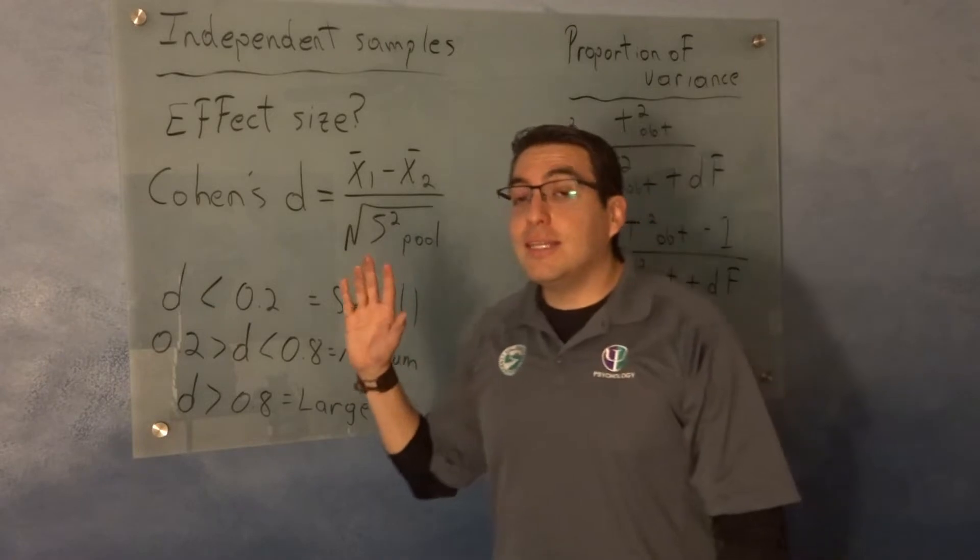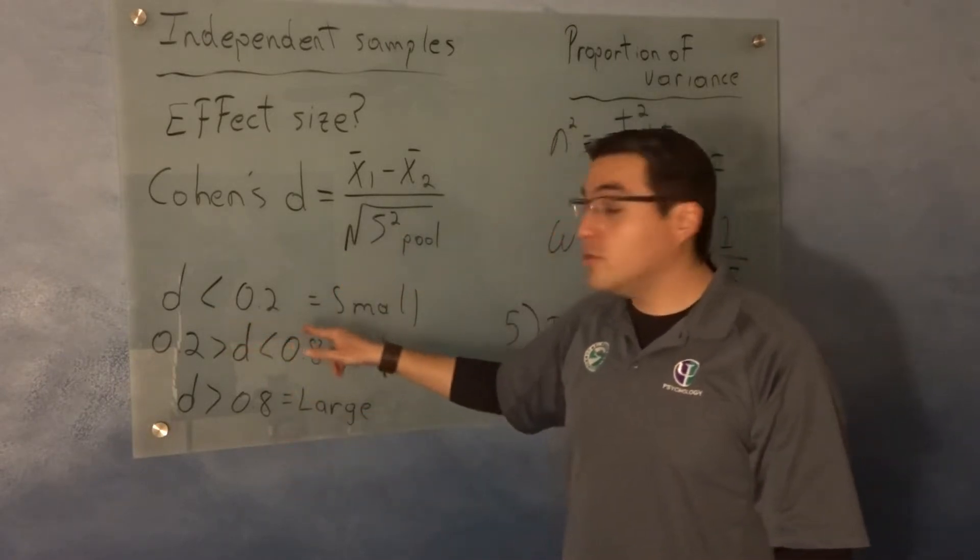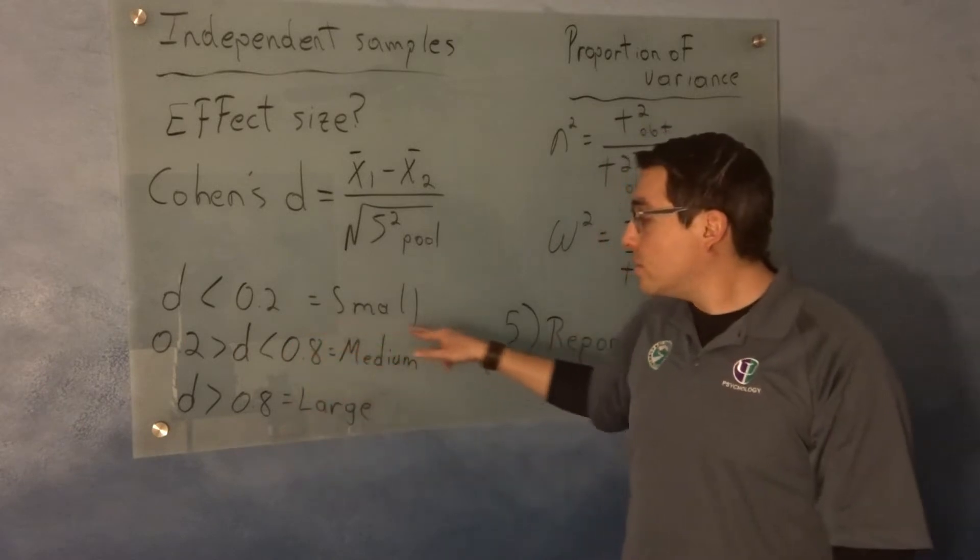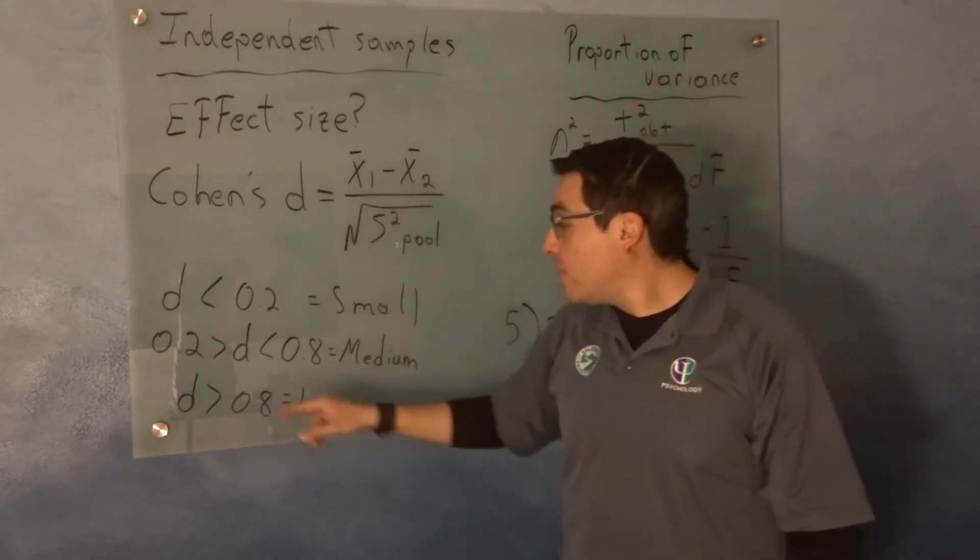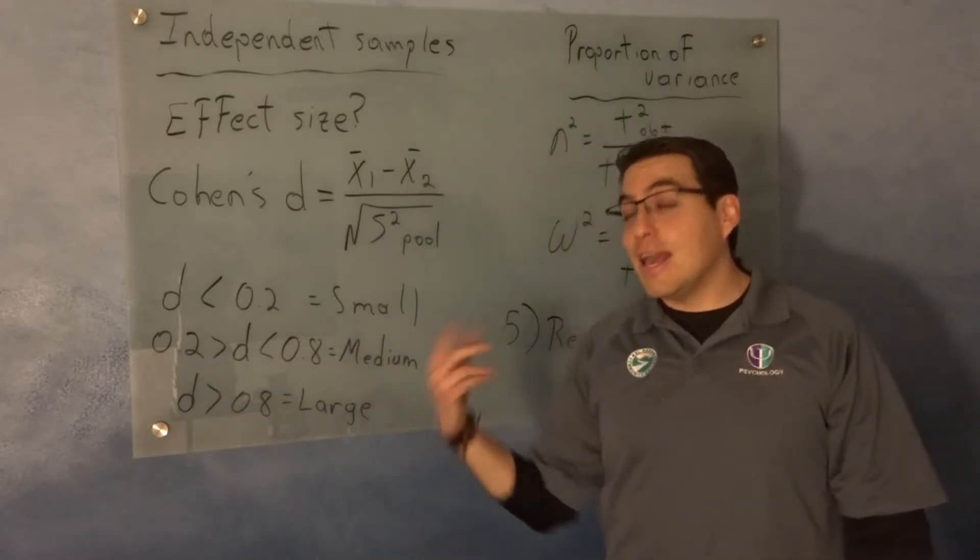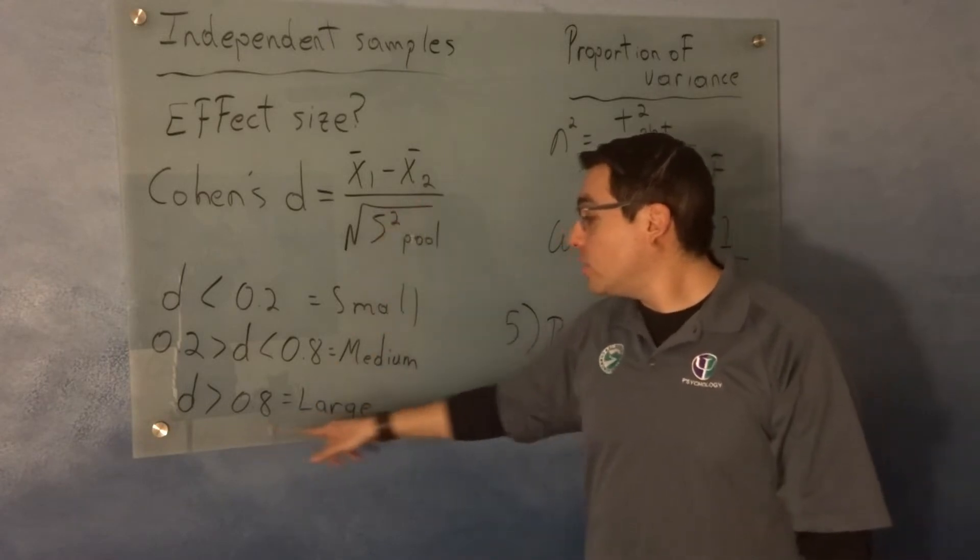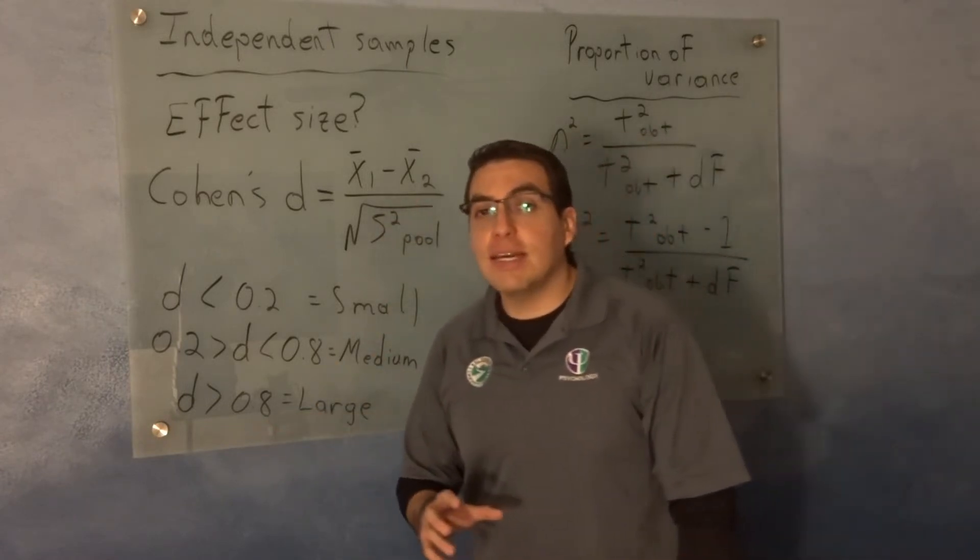If the d that you find is less than 0.2, that's considered a small effect size. If the d that you find is somewhere in the 0.2 to the 0.8 range, that's a medium effect size. And if your value here is bigger than 0.8, that's called a large effect size.